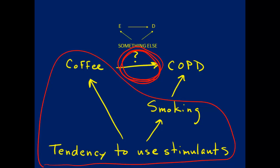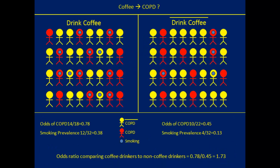Let's look at this phenomenon more closely using a different data representation. We're primarily interested in whether coffee has a causal effect on COPD. We split the data into two parts: those who drink coffee and those who don't — a line above the variable means 'not.' We then look at whether individuals have the disease or not, with red indicating COPD and yellow indicating no COPD.